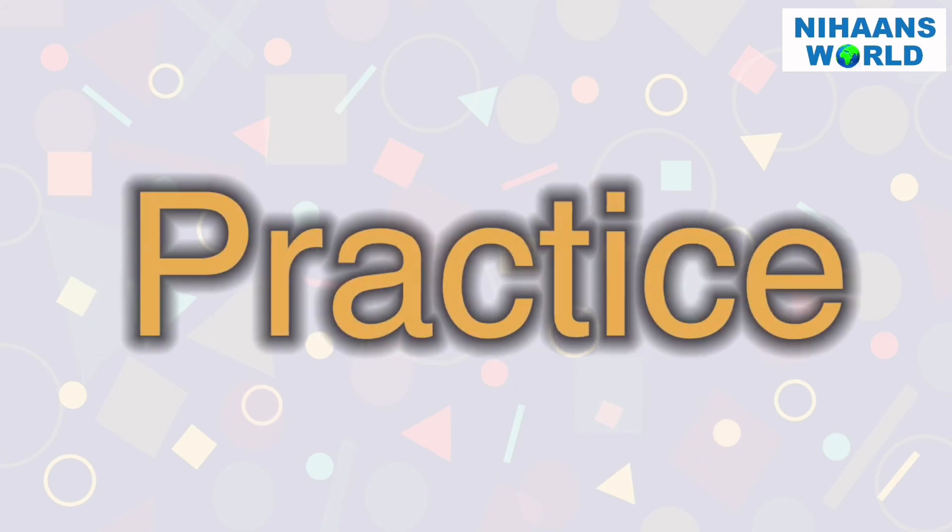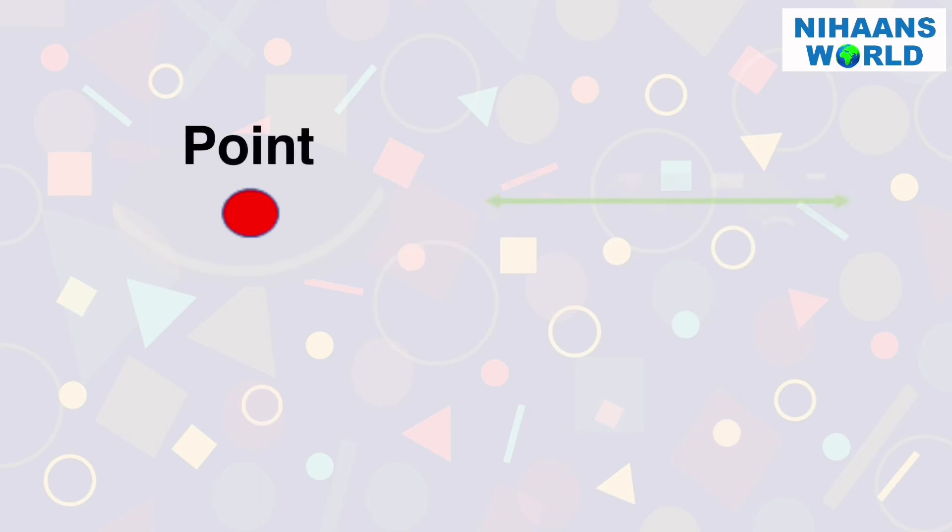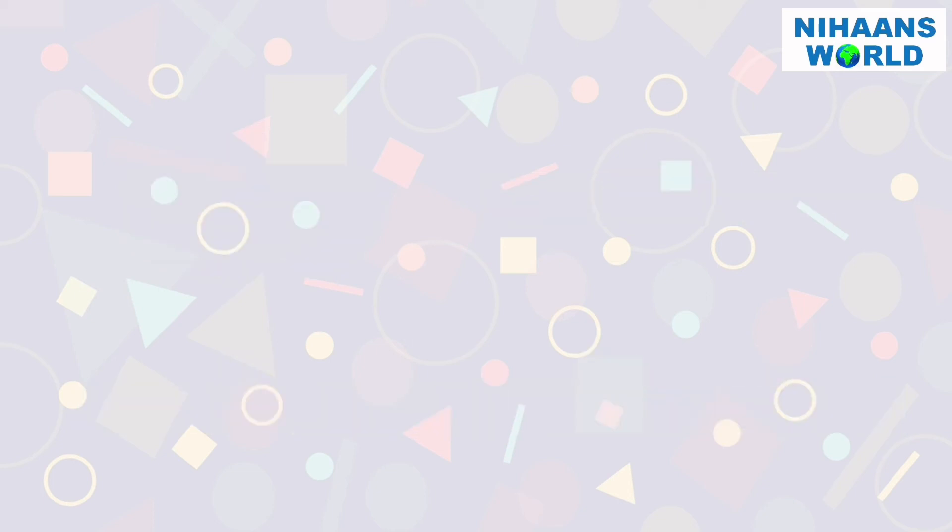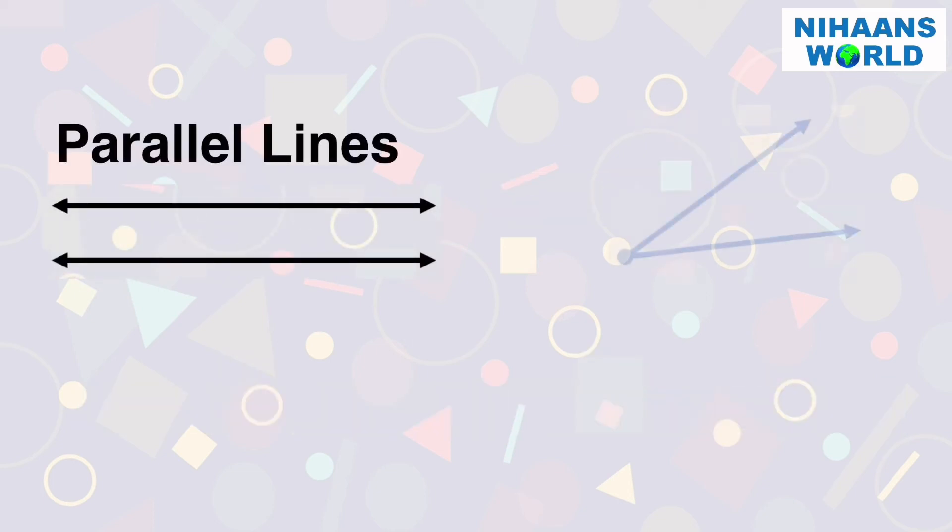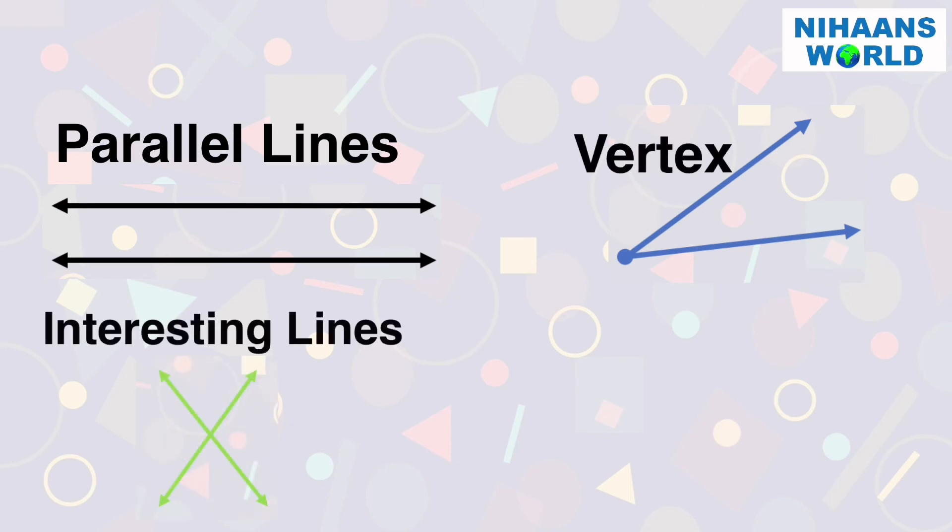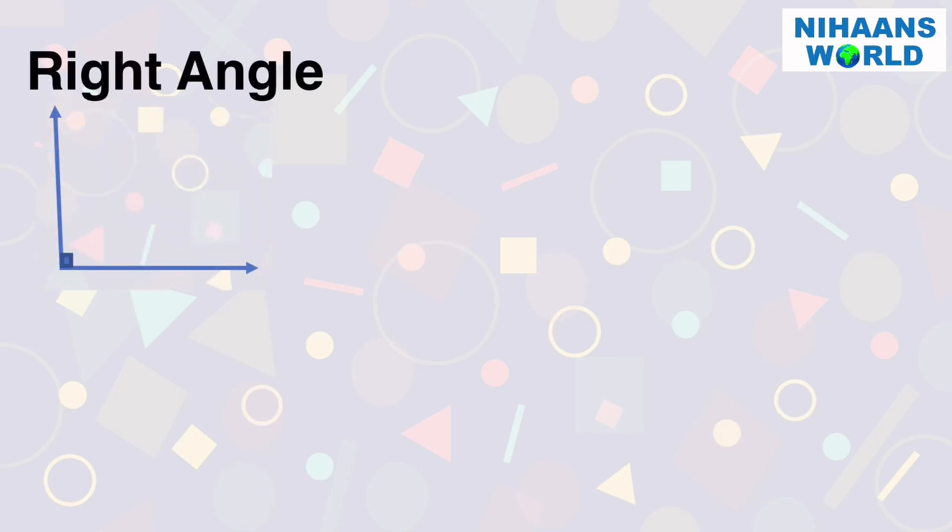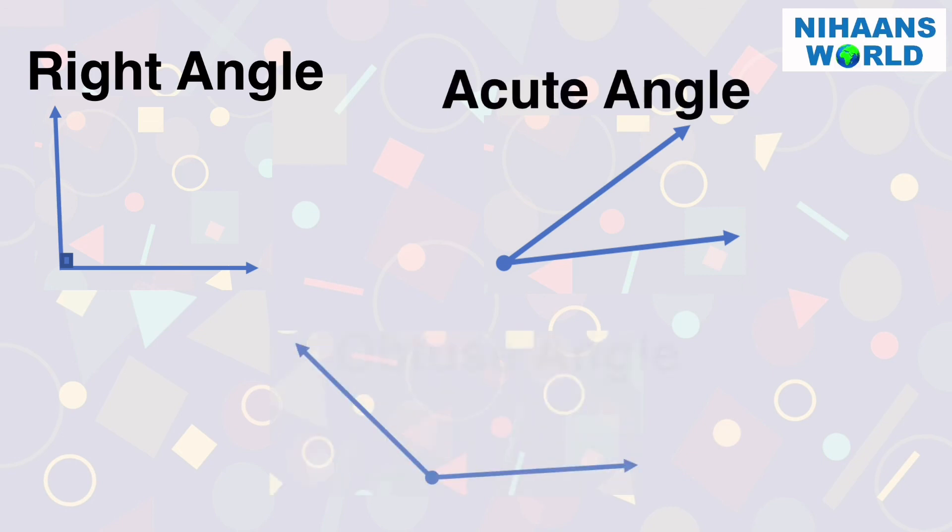Friends, let's do practice and name each figure. Point, Line, Ray, Segment, Parallel Lines, Vertex, Intersecting Lines, Perpendicular Lines, Right Angle, Acute Angle.